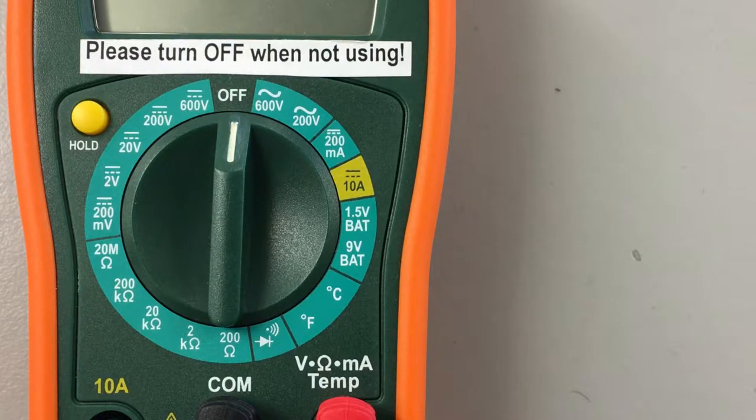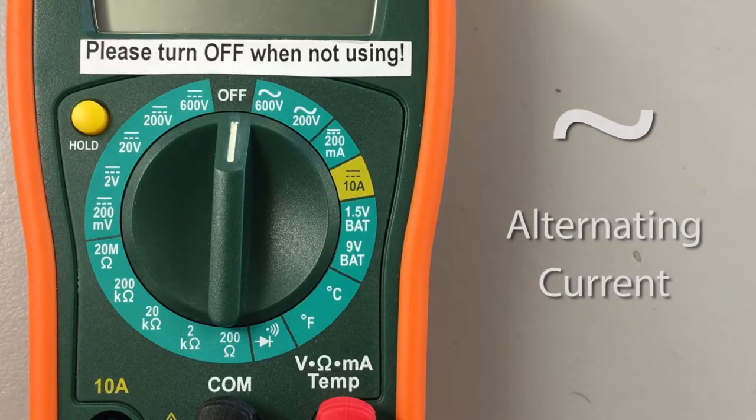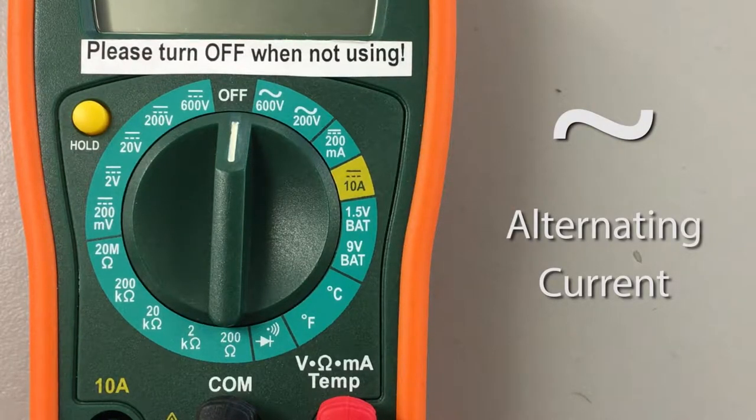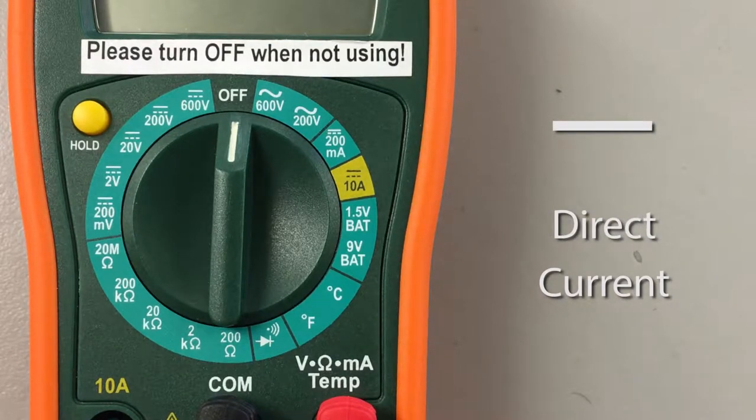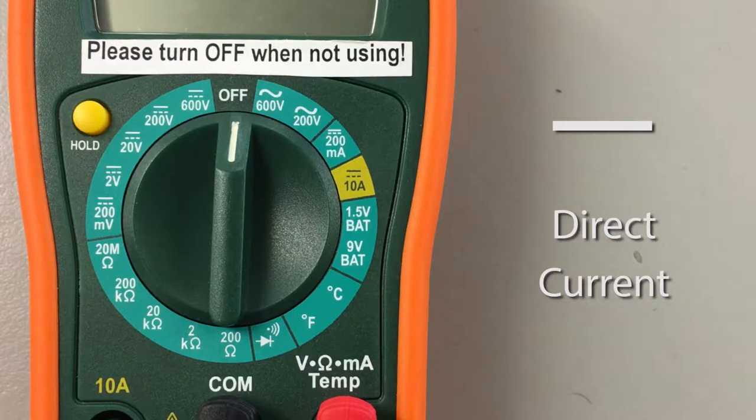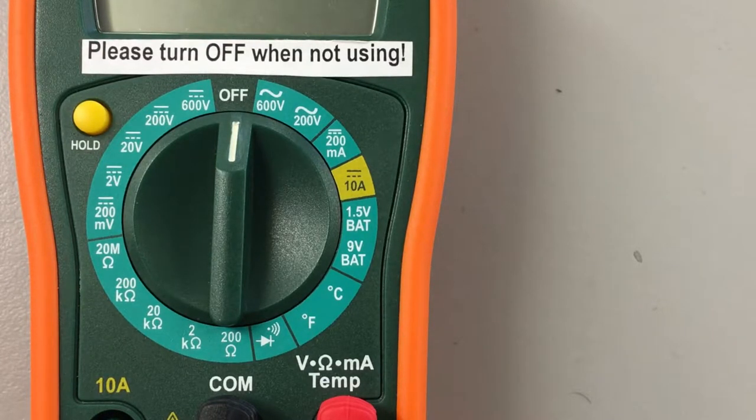Voltage and current can be measured with alternating or direct current. The alternating current symbol is the wavy line above the amp symbol or voltage symbol on the right side. Direct current is identified by a straight line on the left side. We almost never use alternating current in lab, so make sure you know the difference between the alternating current and direct current settings.